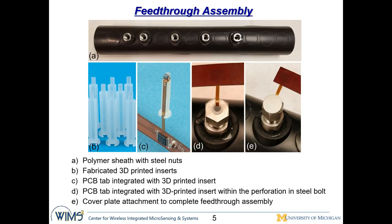This shows more photos of the feedthrough assembly. This is a photo of the polymer sheets with multiple steel nuts used to mate with the steel bolt, and we have the 3D-printed plugs. The plugs are assembled with the lateral tabs of the PCB, with the sensor facing upward. The sensor and the 3D plug are inserted into a hole on the steel bolt, and then finally the cover plate is applied.